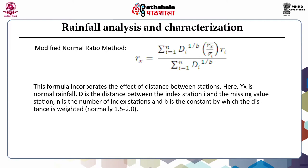The modified normal ratio method incorporates the effect of distance in the estimation of missing rainfall. Here, γX = Σ(i=1 to N) di^(−B) × (R̄X/R̄Z) × Ri / Σ(i=1 to N) di^(−B), where γX is the normal rainfall, D is the distance between the index station i and the gauge station with the missing data, N is the number of index stations, and B is the constant by which the distance is weighted — normally 1.5 to 2, with 0.5 commonly used.